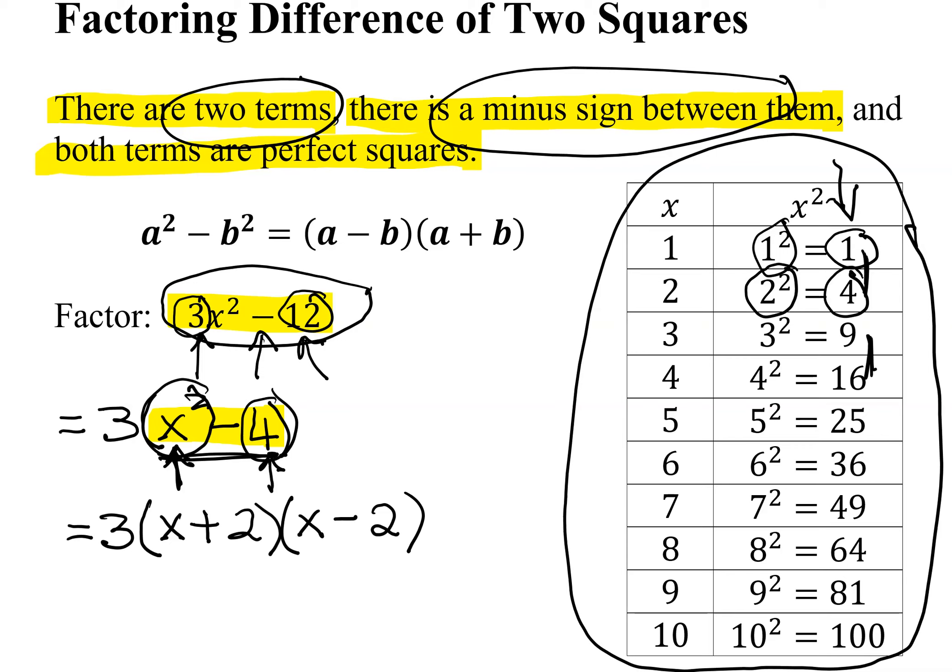So I have now managed to factor this problem by first of all taking out the common factor and then using the difference of two squares. Don't forget if you need to, you can always check it by foiling out your answer.